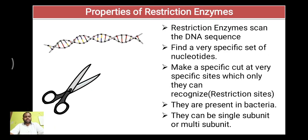Let's see the properties of restriction enzymes. A restriction enzyme will scan the DNA molecule and find a very specific set of nucleotides that will be its restriction site, and it will make a very specific cut at that site which it can recognize. This is called the restriction site. They are present in bacteria. They can be a single functional subunit or a multifunctional subunit having different properties such as restriction site, recognizing site, modifying site, etc.